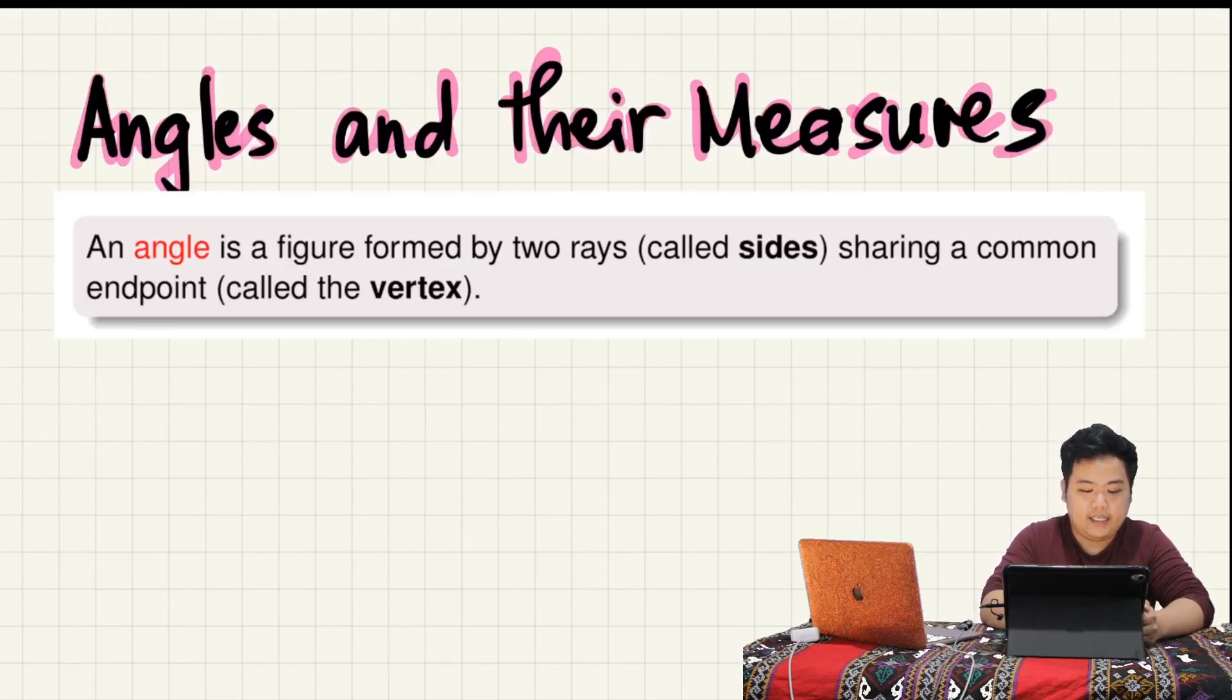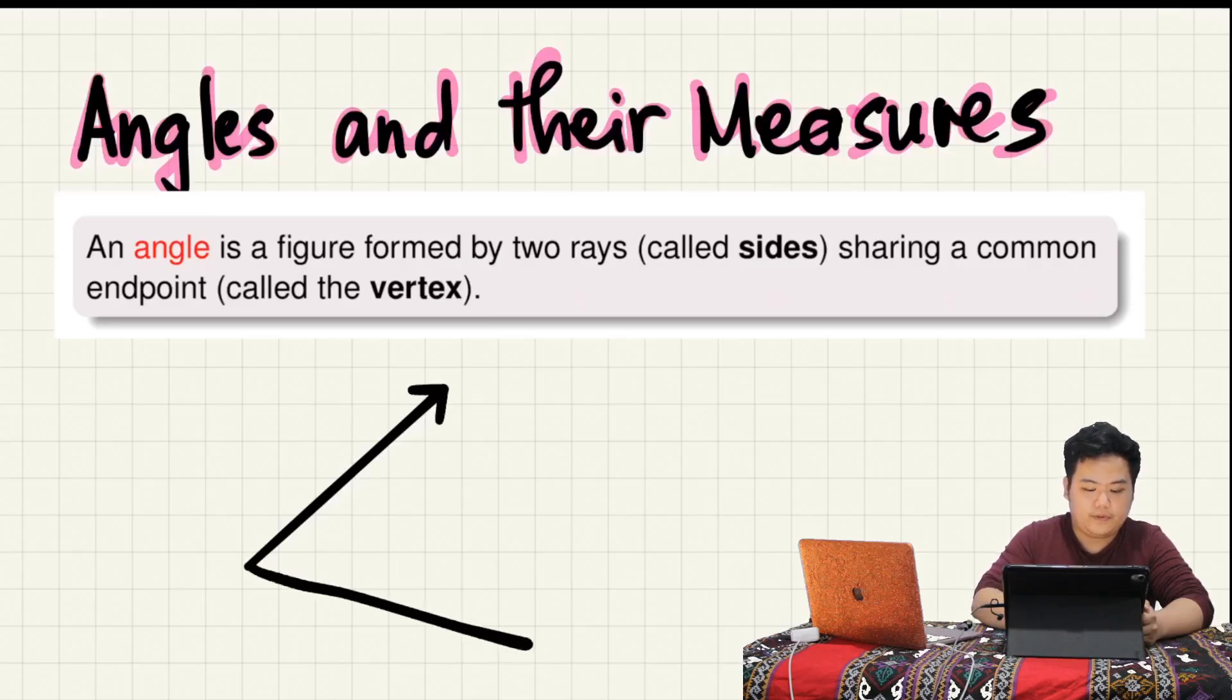That endpoint is the vertex. Ang itsura ng isang angle ay ganito. Something like that. And yung isa diyan gumagalaw, yung isa hindi or fixed.